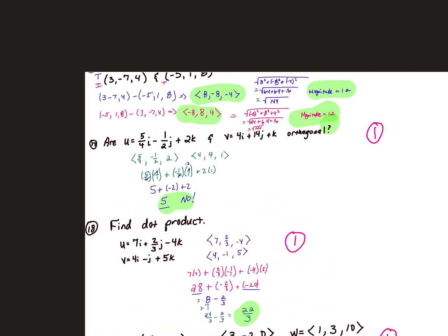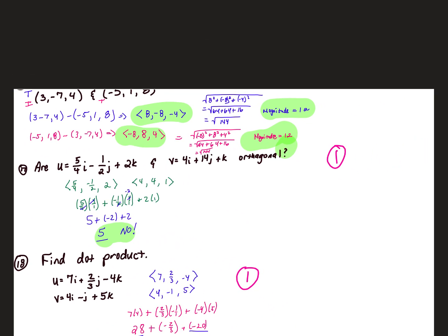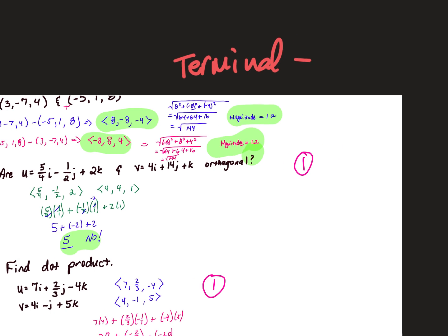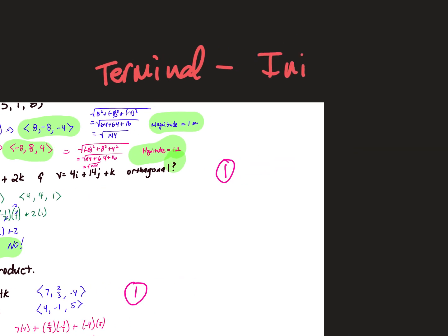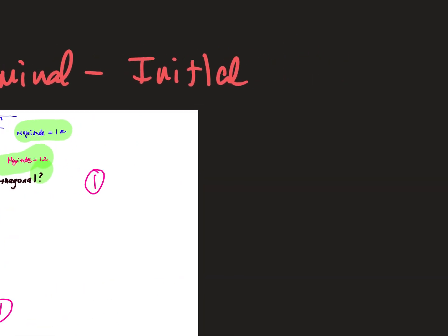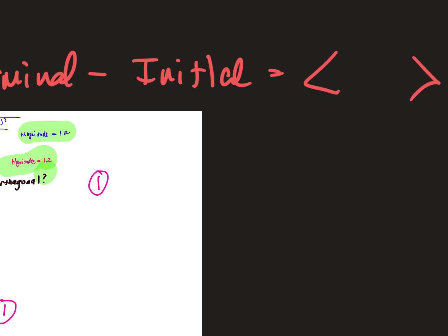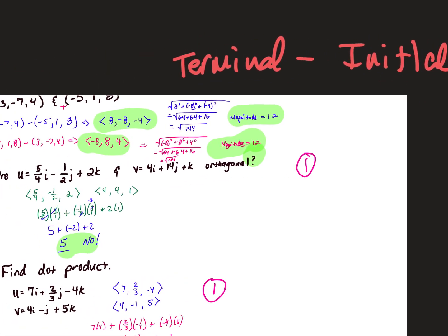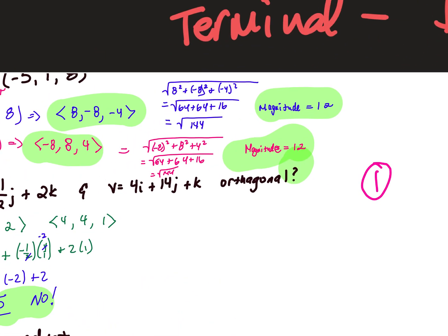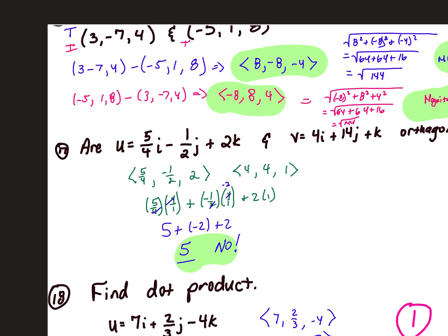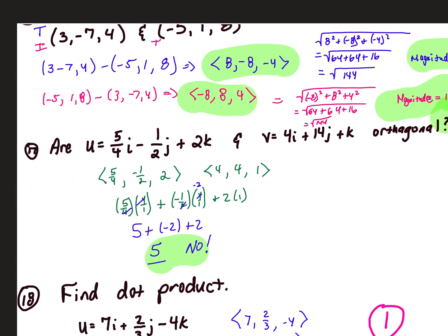Okay, next thing we're going to look at, how to find component form. Remember, it's terminal minus initial. That'll give you your vector. And then once you get your vector to find the magnitude, you just square each piece, add it together, take the square root.